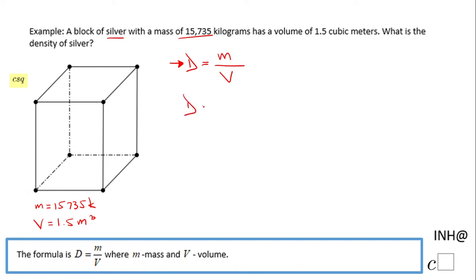In this case, we have density equals 15,735 kilograms over 1.5 cubic meters. The only thing we're going to do here is grab a calculator and do this division. I end up with a density of 10,490 kilograms per cubic meter.